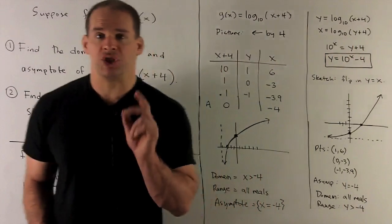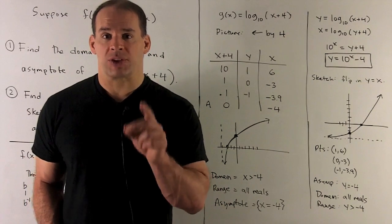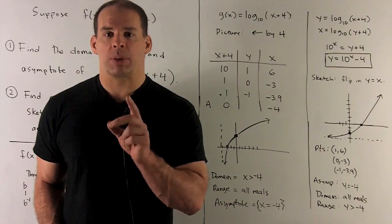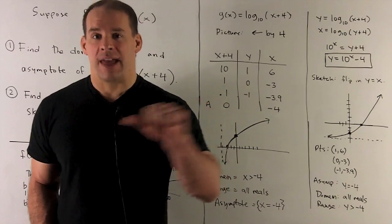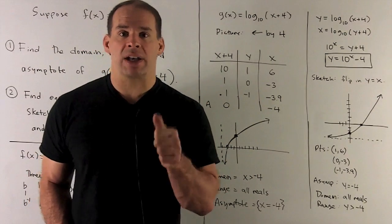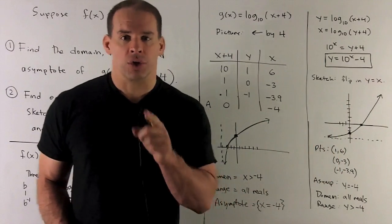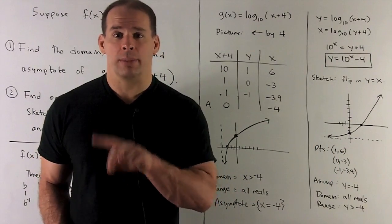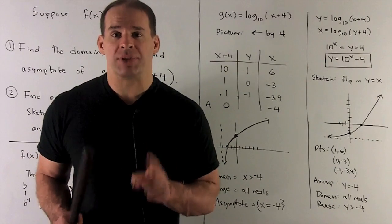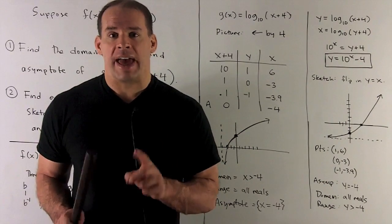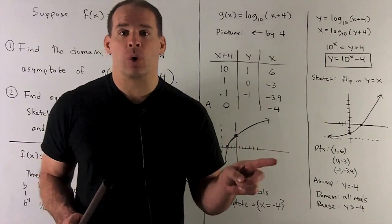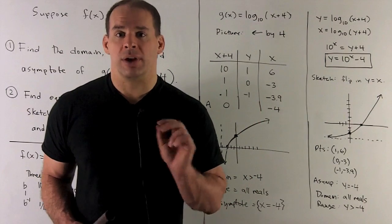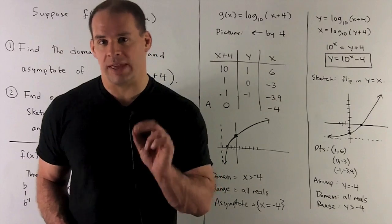Now I want to look at g of x, which is f of x plus 4. The rule is: if it says x plus 4, I go to the left by 4. If it said x minus 4, I go to the right by 4. Usually when you alter the function on the inside — when you mess around with x — you do the opposite of what you would think. If I had f of x and then added 4, that would just be moving up by 4. But here it's on the inside, so do the opposite.